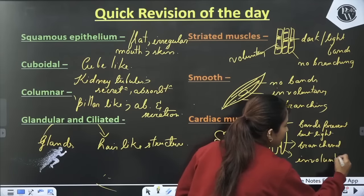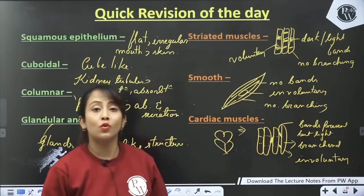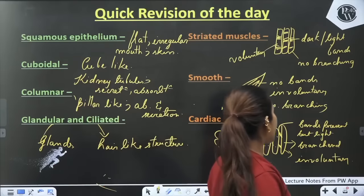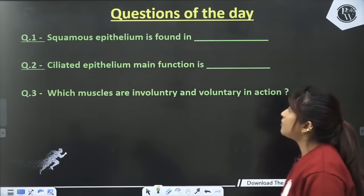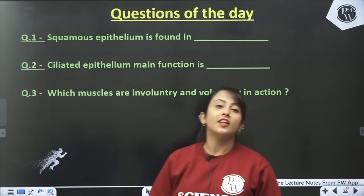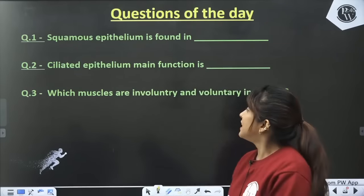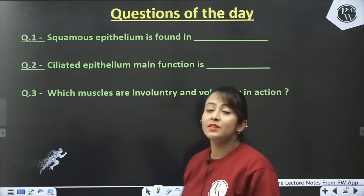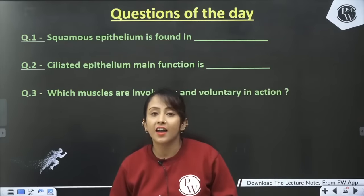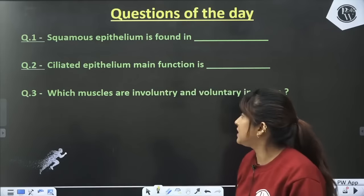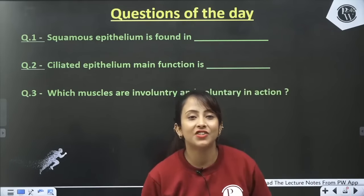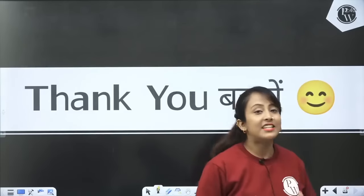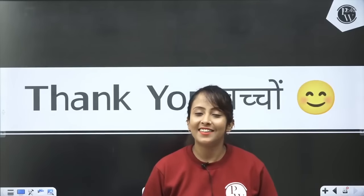That's all for today. Now some questions: Where is squamous epithelium found? What is the main function of ciliated epithelium? Which muscles are involuntary and which are voluntary? Write your answers quickly in the description box. Thank you, keep studying, all the very best!